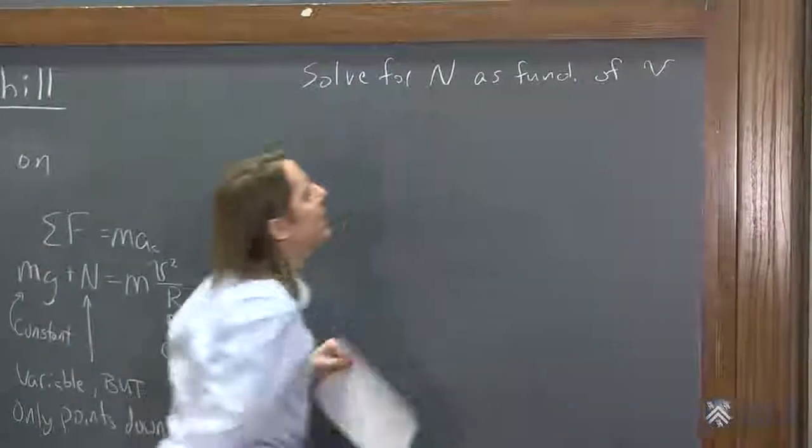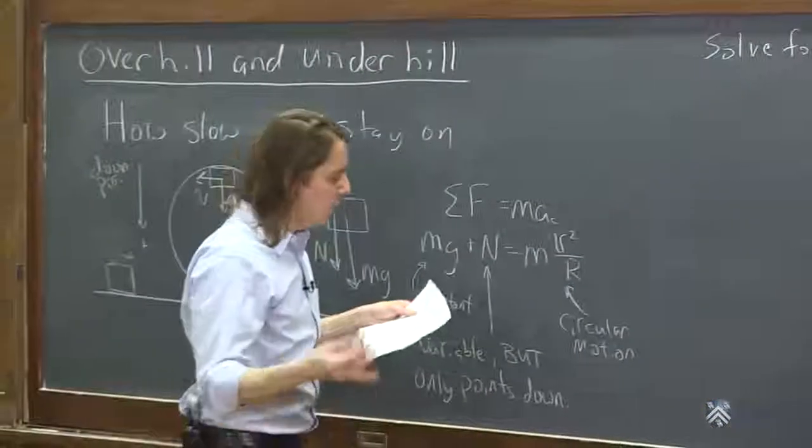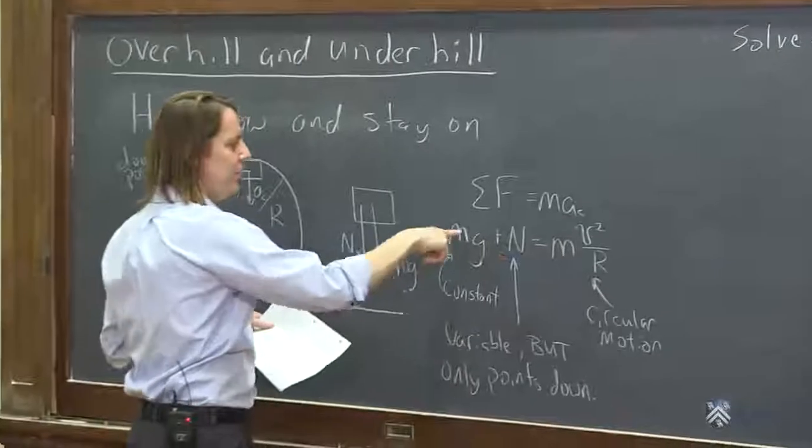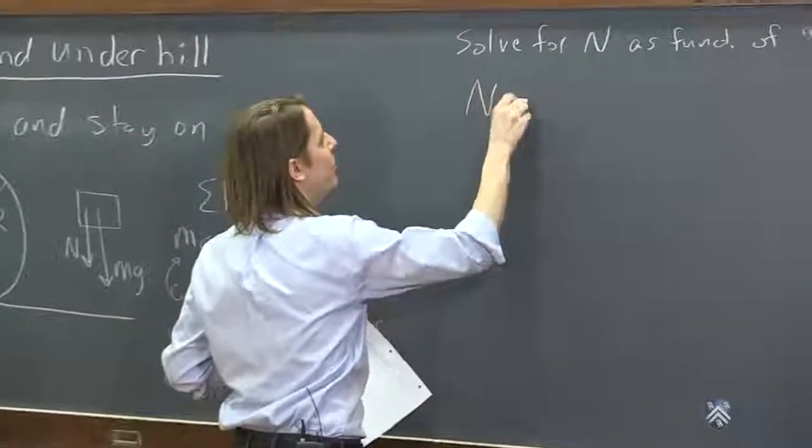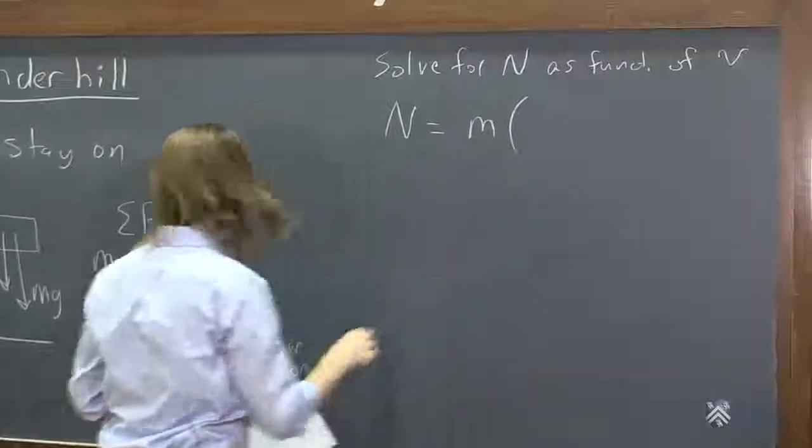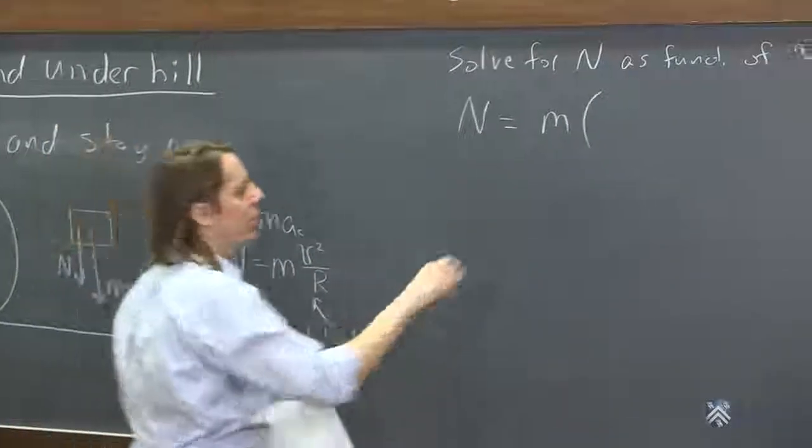So what normal force are you going to get for any speed that you go? And you turn this around, and this comes over here, or this goes over there, and you pull out the m, and you get that the normal force is m times v squared over r minus g.